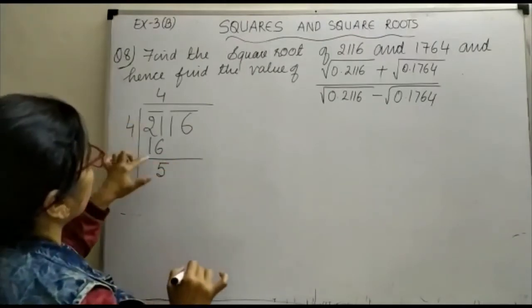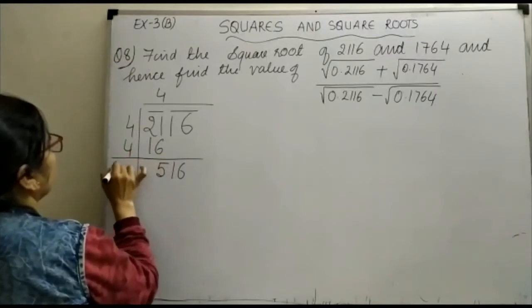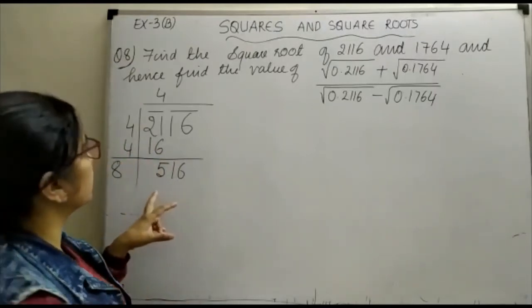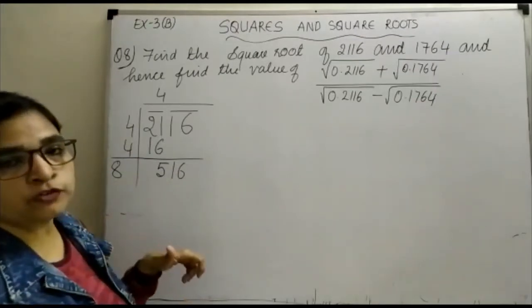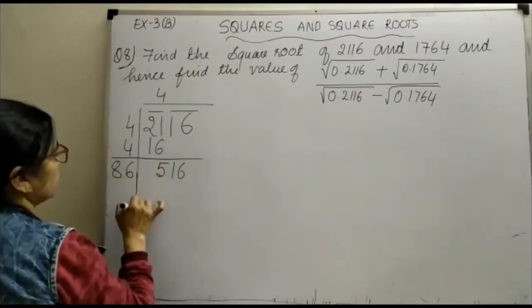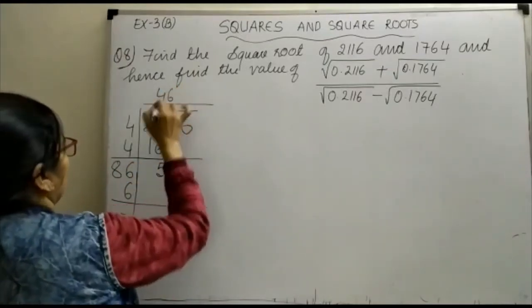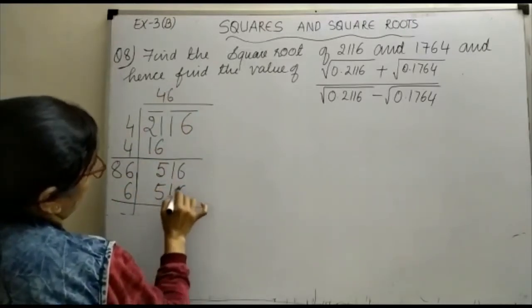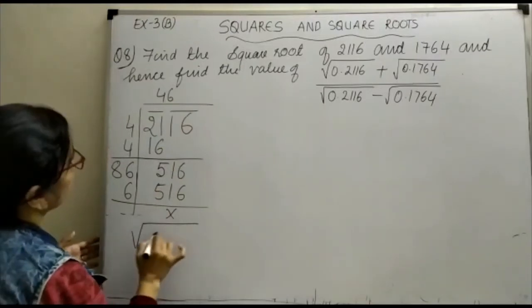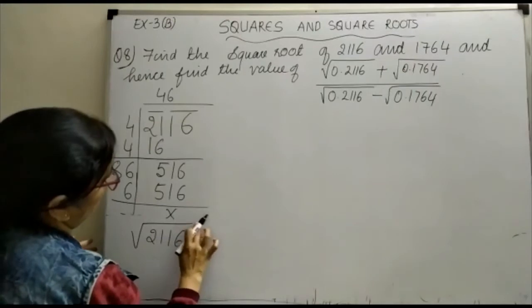Now here it is 5, 11-6-5. आपने 16 ले लिया, यहां पर 4 आपने carry किया. अब आपको ऐसा number चाहिए जो 516 आजाए, तो यह आपका 46 से आएगा. यह फिर 46 से ये number 516 से कम होगा. हम लोग इसको 6 से check कर लेते हैं: 6 times 6 is 36 and 3 carry, so this is 516. So the square root of 2116 is 46.